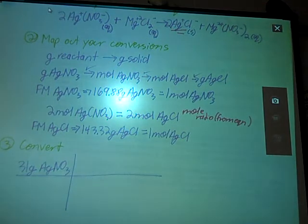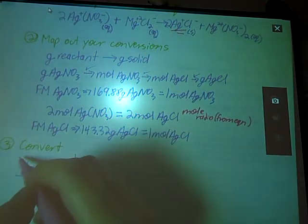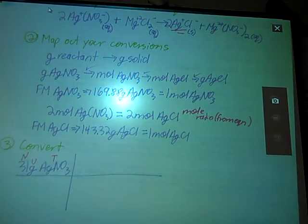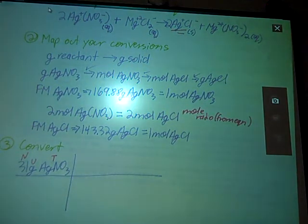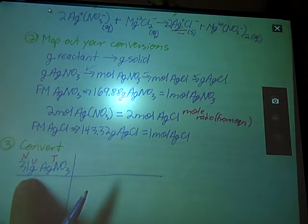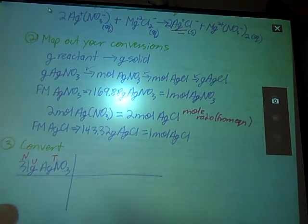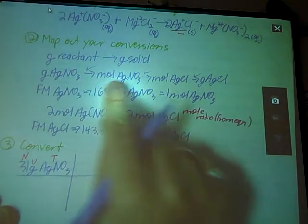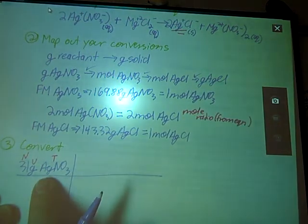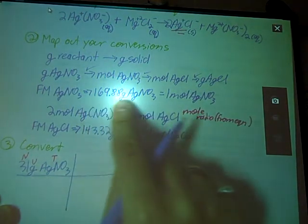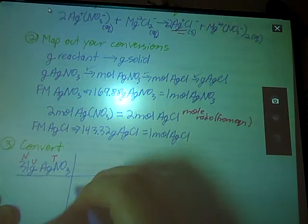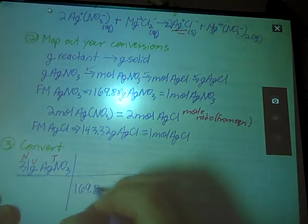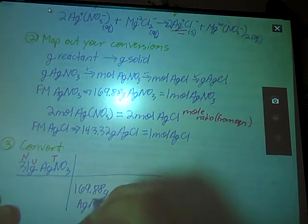So 31 grams silver nitrate. And like I tell my kiddos in my chemistry class, each of these boxes needs to contain a nut - a number, a unit, and a thing. So the squirrels are much jealous come wintertime. So grams, silver nitrate. I don't want grams of silver nitrate. We're going to grams of silver chloride. But we've got to follow our steps.